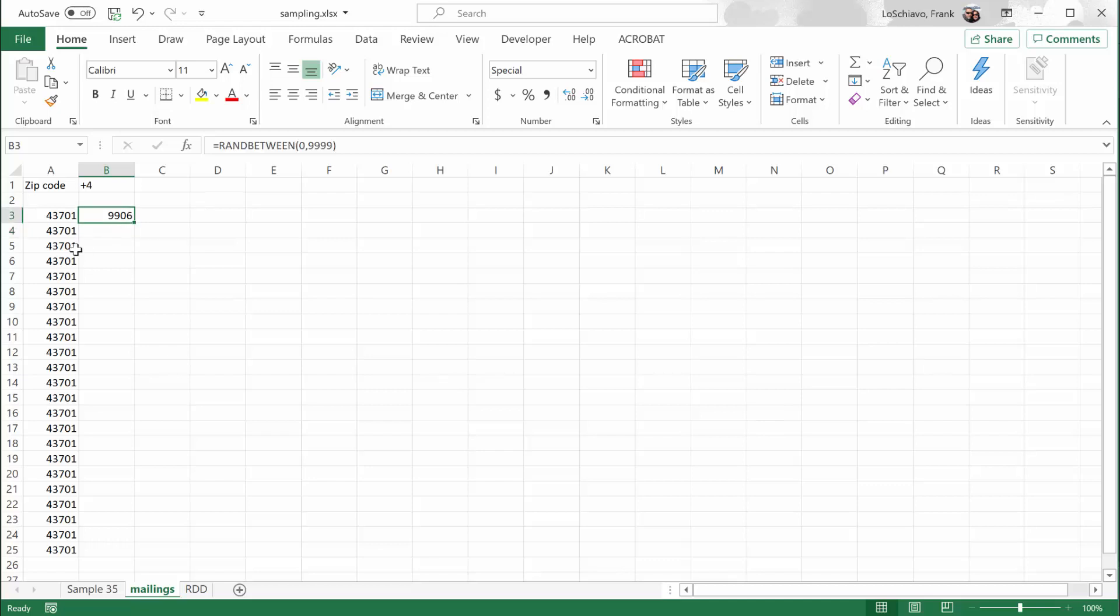If we wanted to have more options, we could select that and copy it down. So that's one way we could use Excel to randomly select some zip codes for a random mailing.